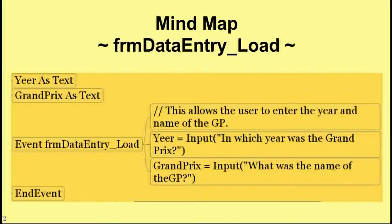We start with the comments: this event allows the user to enter the year and the name of the Grand Prix. Then we have the commands: year equals input 'in which year was the Grand Prix?' — so the user would type in something like 2011. And then: Grand Prix equals input 'what was the name of the Grand Prix?' — the user would type in something like Monaco. So we end up with year containing '2011' and Grand Prix containing 'Monaco'.